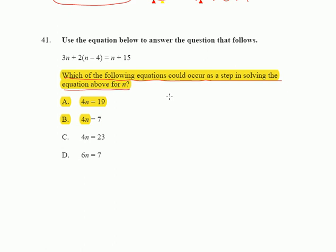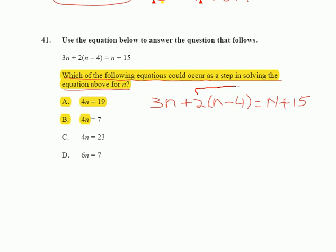What you have to do is just work the problem and figure out which step also occurs as part of solving it. Let me rewrite it. These are all N's across here. The first thing we have to do is get rid of the parentheses. So that gives us 3N plus 2N minus 8 is equal to N plus 15.